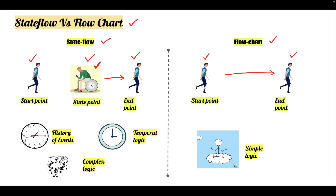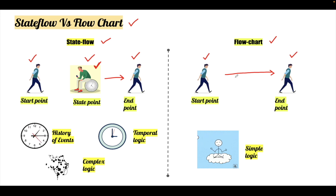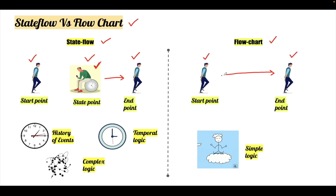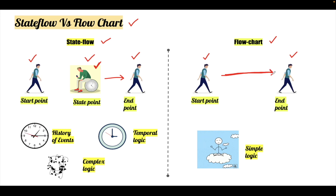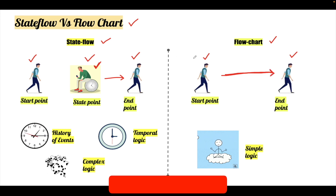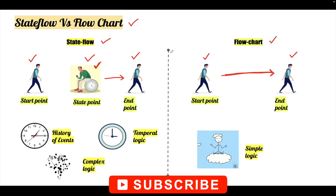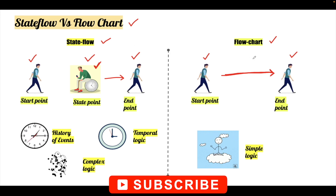In a flow chart we will start and we will end, and once we connect the starting point to the end then the flow will happen. That is the main difference between a Stateflow chart and a flow chart.